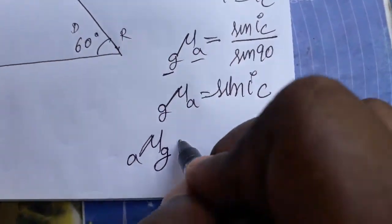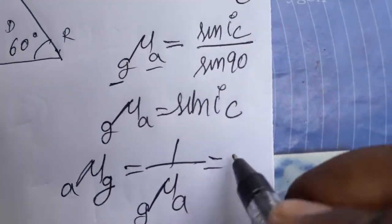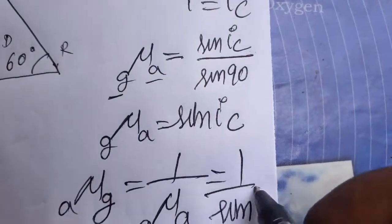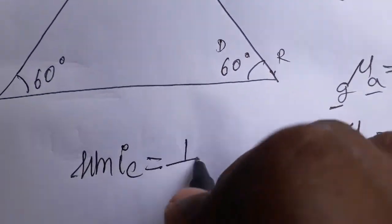It is 1 by μ of G to A, that means 1 by sin IC. So we are going to get sin IC equals 1 divided by μ of A to G.